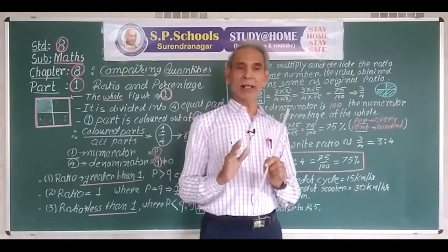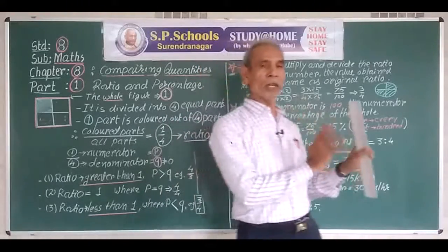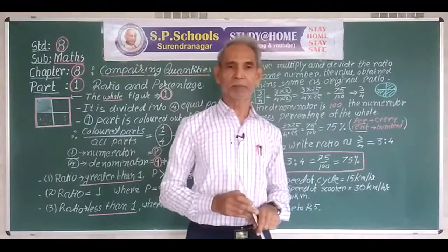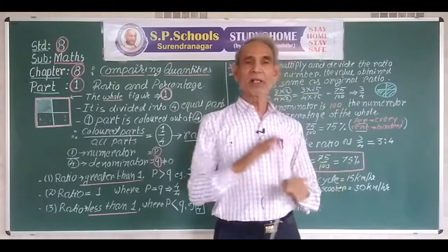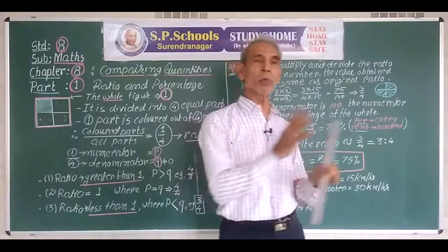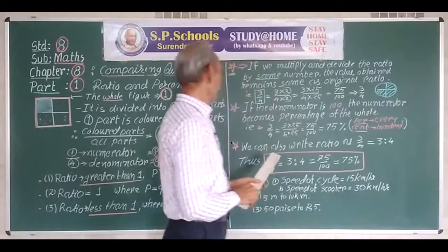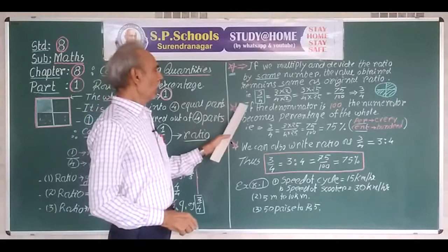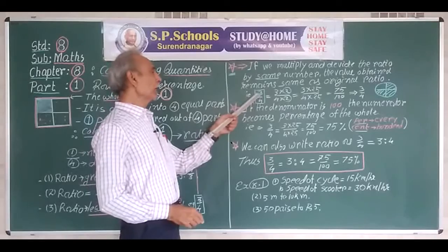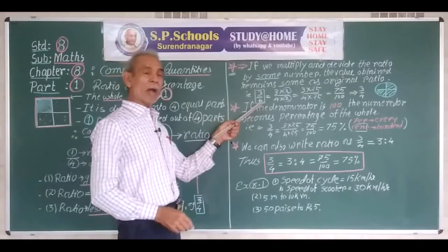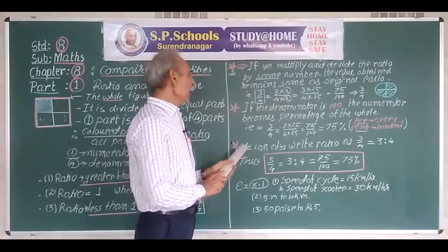Suppose there are 30 apples in one market and 40 apples in another market. What is the ratio between them? 30 is to 40, that is, three is to four. So three is to four — we have taken three parts out of every four parts of the whole.